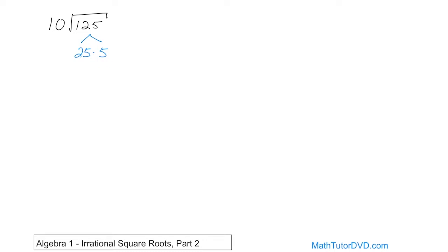I can't do anything with this 5 because it's prime, so the 25 can be written as 5 times 5. Now I've got everything down the tree as far as it goes. I can circle this one pair, but this 5 has no partner, so we can write the answer now. The 10 is always going to be out there times whatever the result of that radical is, which is the pair of 5s that can be pulled out as a 5, but this 5 does not have a pair, so you need to keep him under the radical.